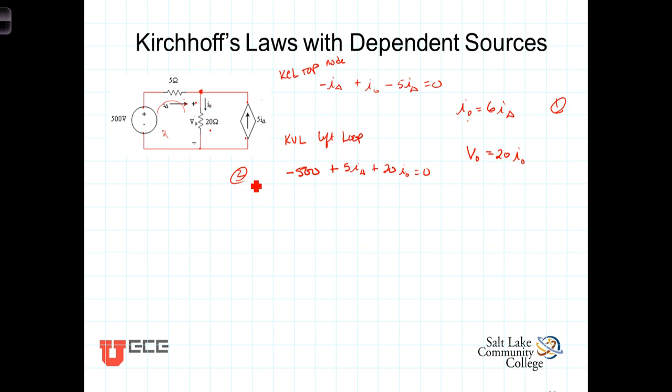We've got one equation here and another equation here, both in terms of the unknowns I-naught and I-delta, therefore we can solve this. Let's take this equation, bringing the minus 500 over to the other side as positive 500, and we have 5 I-delta plus 20 times I-naught. But rather than writing I-naught, let's substitute with 6 I-delta. We have plus 20 times 6 I-delta, and the sum equals positive 500. So we have 5 I-delta, 20 times 6 is 120 I-delta plus 5 I-delta, that's 125 I-delta equals 500, or 500 divided by 125 is 4 amps.